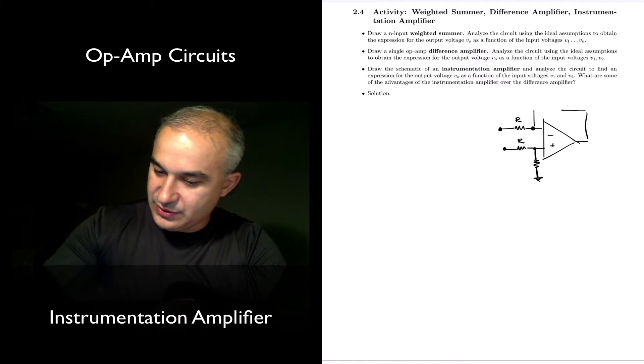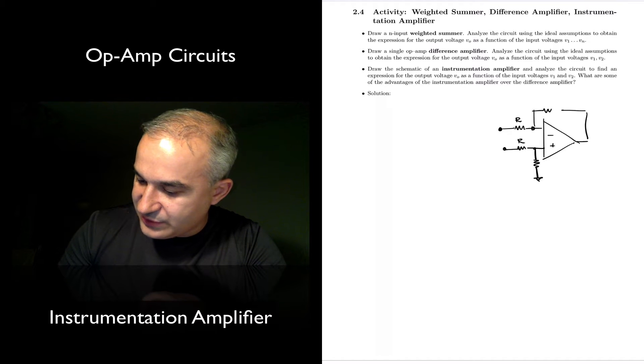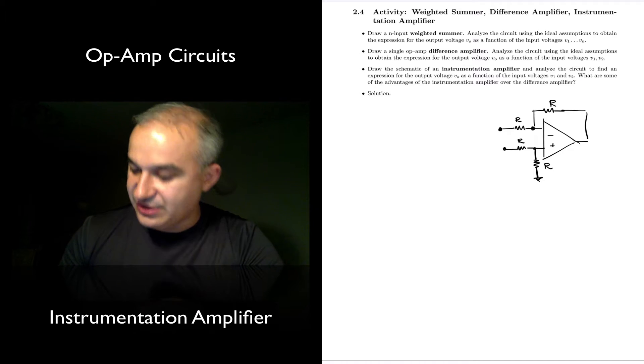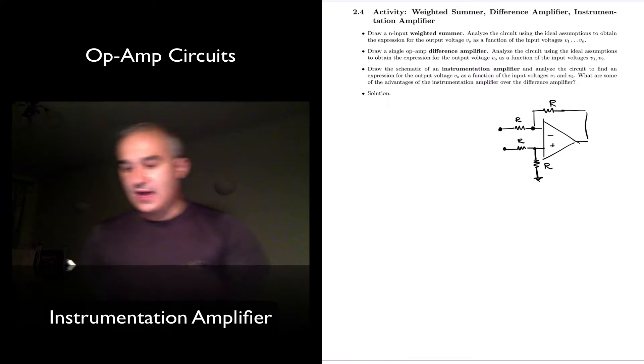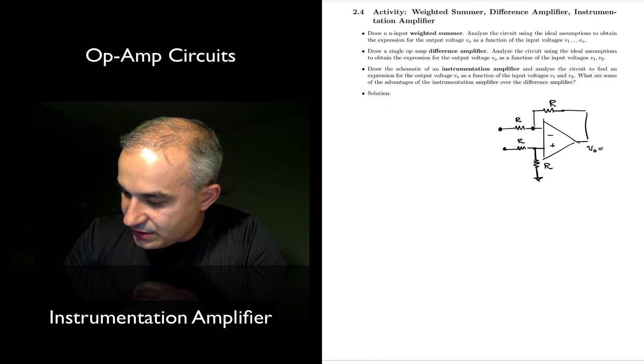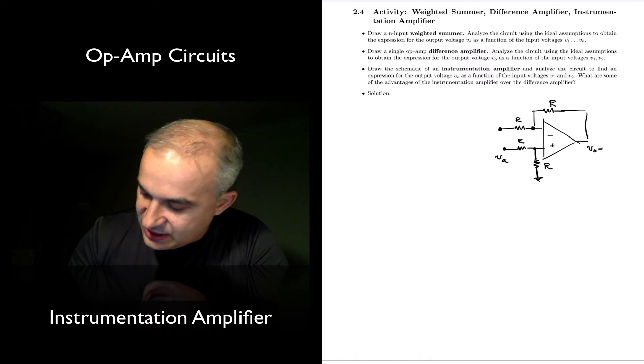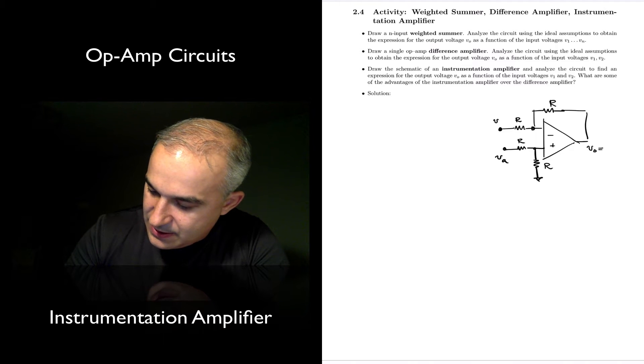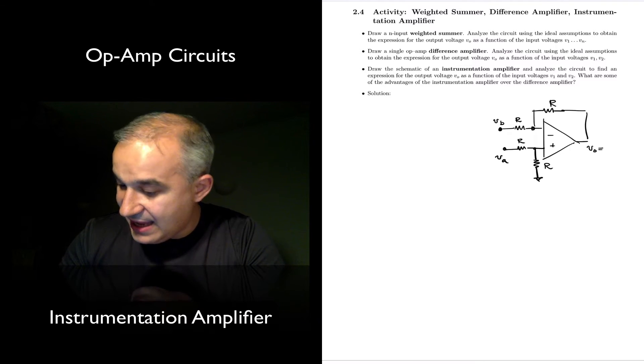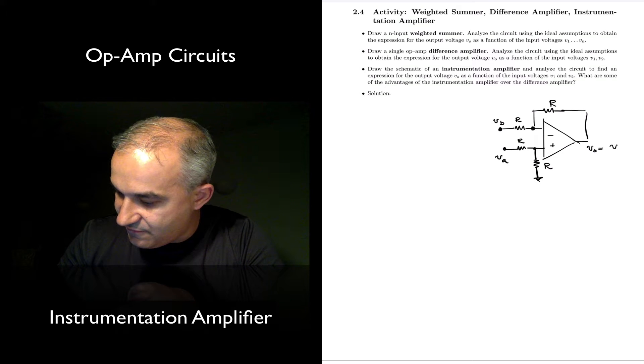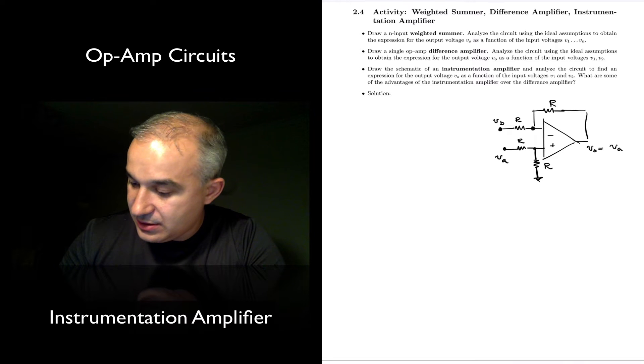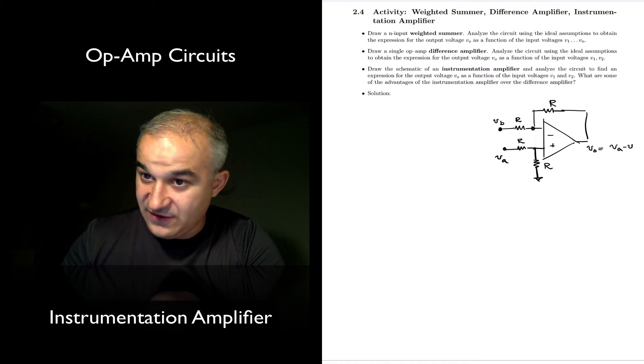So the way to do that is that the resistor here in the feedback is R, and the resistor here is R. And if you recall, the output of this, I'm going to call this VA and VP, was A times VA minus VV.